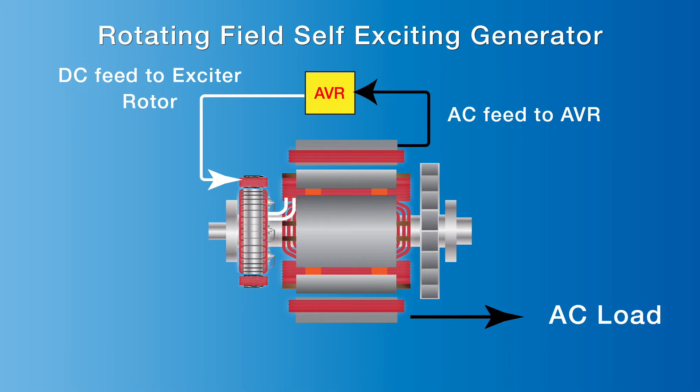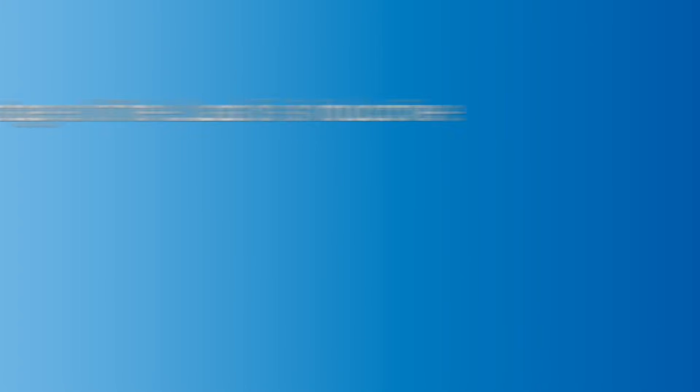A self-excited excitation system is a very effective method for regulating voltage output, especially for non-inductive loads such as heaters and lighting. However, a self-excited generator's output voltage is not the best option when a high percentage of the load is inductive, like electric motors. When started, they can reduce the generator's output voltage.